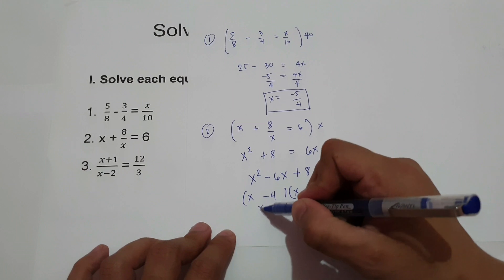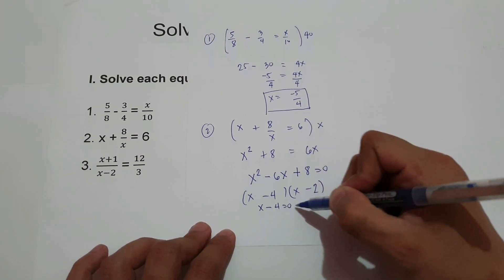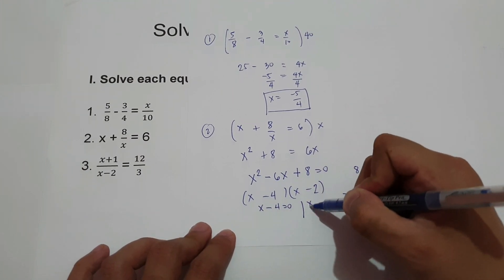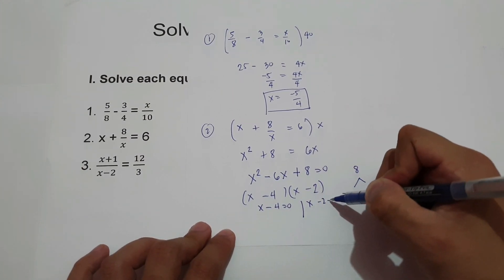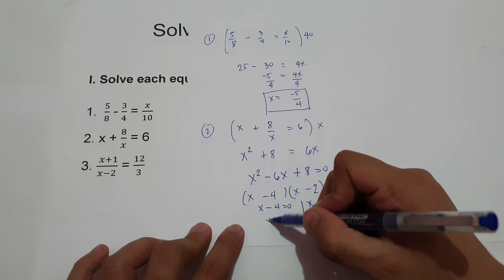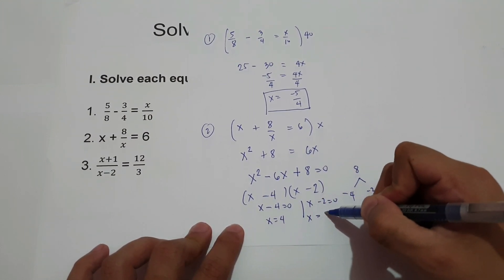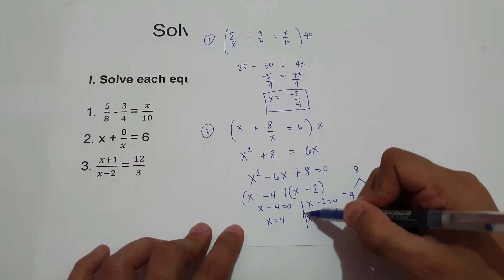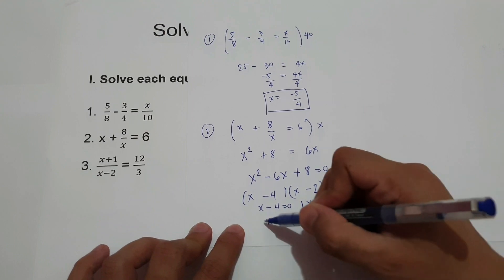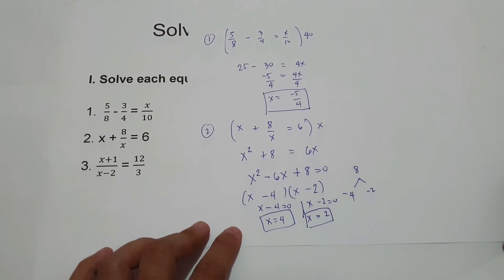Then let us equate to 0: x minus 4 equals 0, and x minus 2 equals 0. Therefore, x is 4 and x is 2. So those will be the values of x.